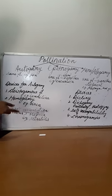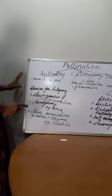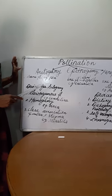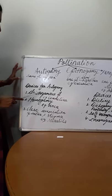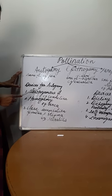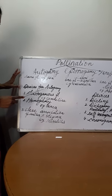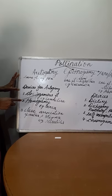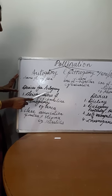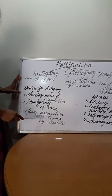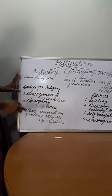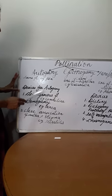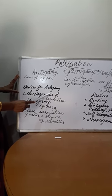Next we are going to the devices for autogamy. What are the devices which are used for preventing cross pollination? These make the possibility for autogamy, i.e., they prevent cross pollination.